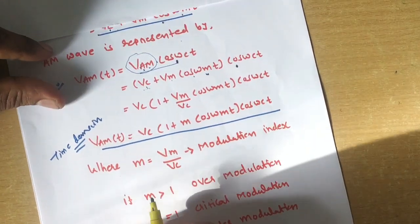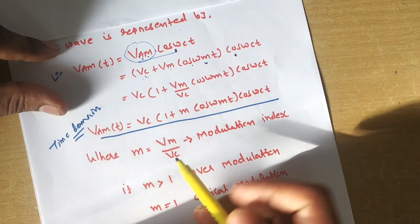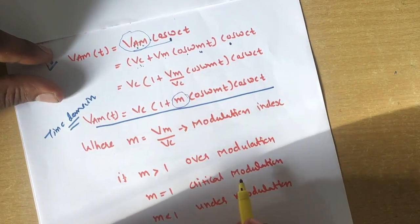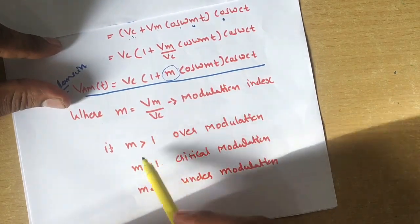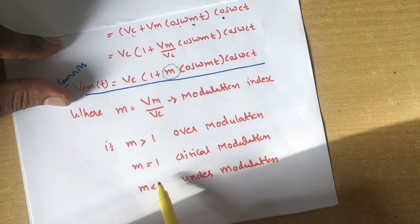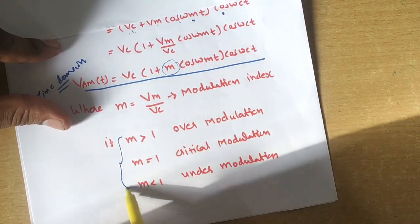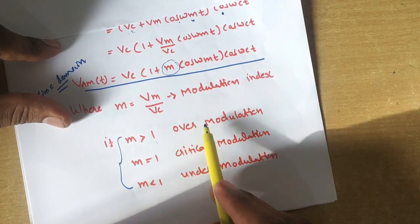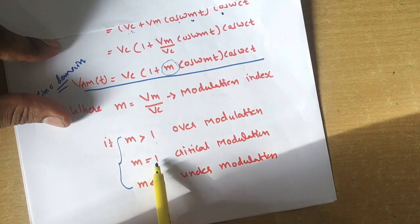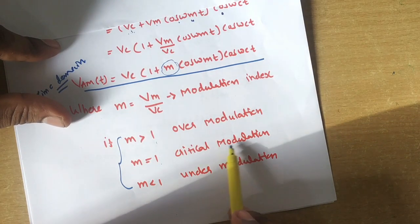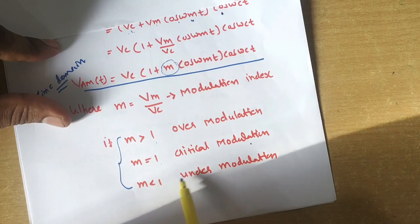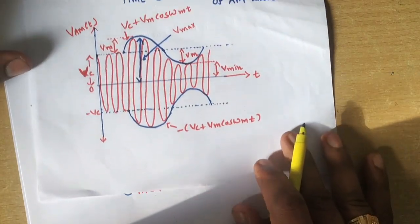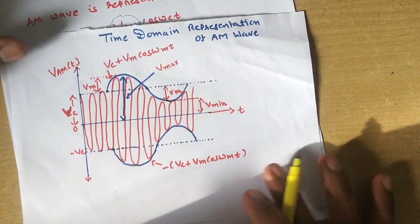Where m = Vm/Vc is the modulation index. Depending on the value of m, there are three types of AM modulation: if m is greater than 1, it is called over modulation; if m is equal to 1, it is called critical modulation; and if m is less than 1, it is called under modulation.